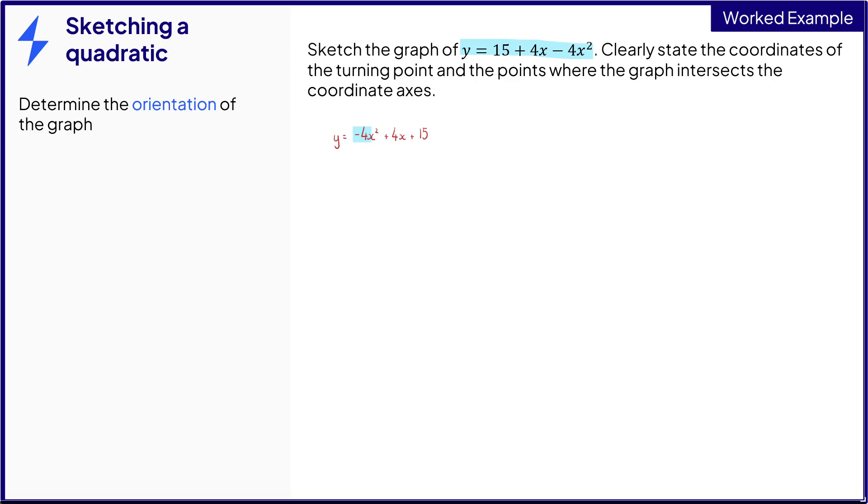Next, we also need to find where the graph intersects the coordinate axes. So first of all, the y-intercept can be found just by substituting x equals 0, or since it's in the general form, we can spot it's just 15. So the coordinate is 0, 15.